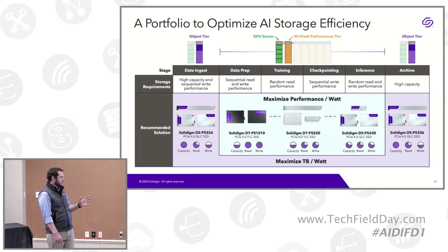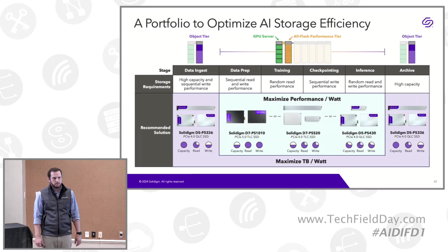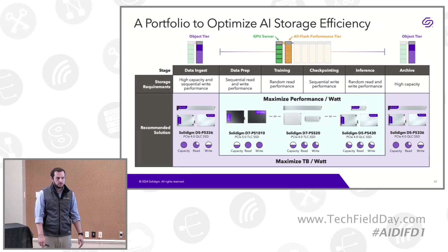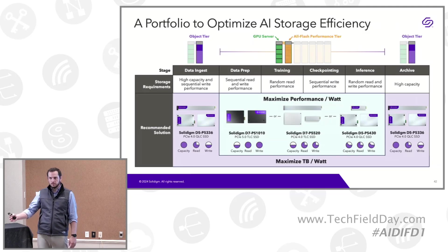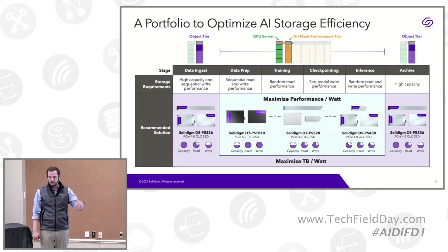That's also why the purple is structured as a bathtub. If you want to maximize for density across the whole pipeline, you could do worse than putting high-density QLC everywhere. It still has read throughput on par with TLC drives — we're talking 7 gigabytes per second sequential read.